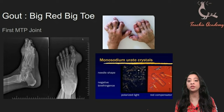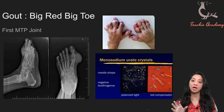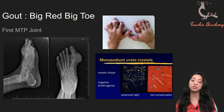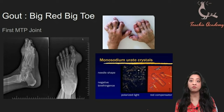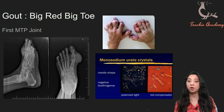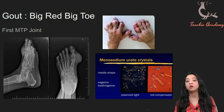Gout presents in discrete on-and-off flare-ups. When a patient has uncontrolled or untreated gout for a long period, they may develop tophi — you can see these on the top of the screen — which are inflamed and calcified joint deformities, often found in the fingers and the ear. On your exams, pictures of tophi on the ear are a clincher for gout.